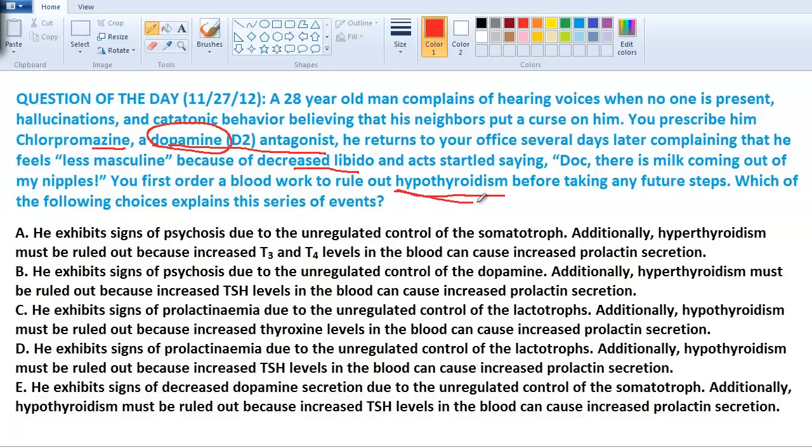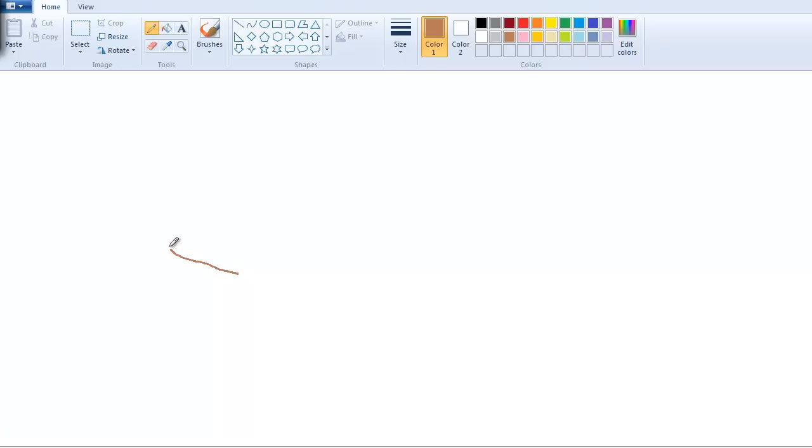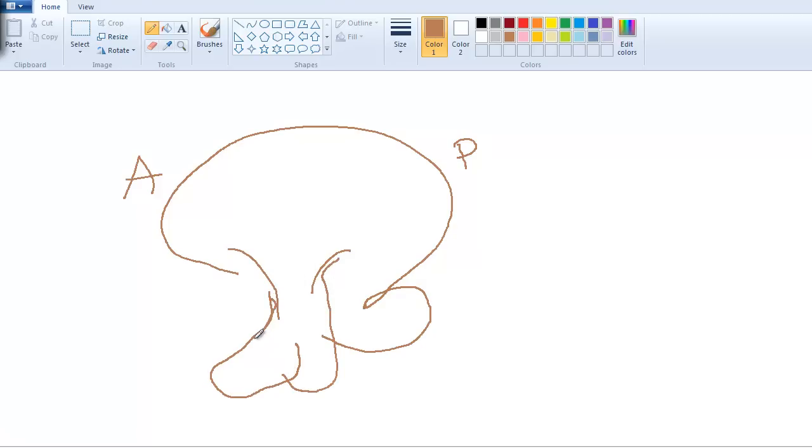to talk about dopamine and the thyroid and lactation. Let's draw a picture here of the brain. Here's the cerebellum. This is the posterior side, this is the front or anterior side. You'd have over here the hypothalamus, and then coming down here you have your pituitary gland.